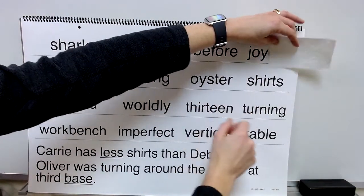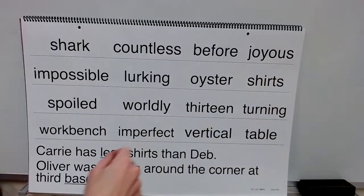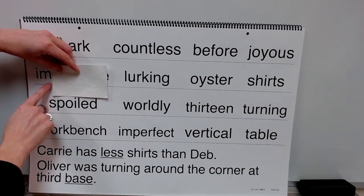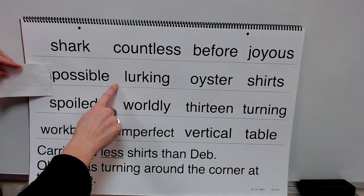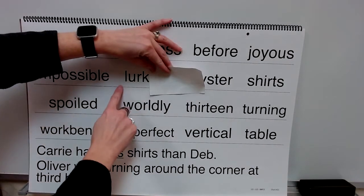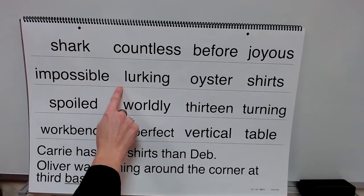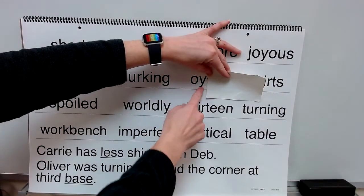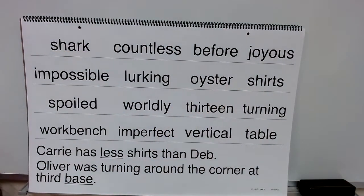Base word: joy. Suffix: ous. Word: joyous. Prefix: im. Base word: possible. Word: impossible. Base word: lurk. Ending: ing. Word: lurking. Syllable: boy. Syllable: stir. Word: oyster.